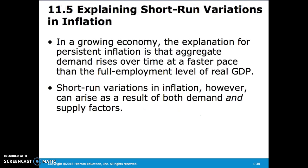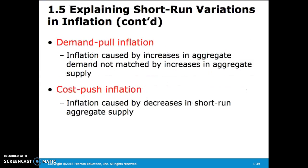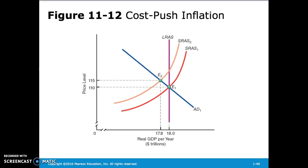In a growing economy, the explanation for persistent inflation is that aggregate demand rises over time at a faster pace than the full employment level of real GDP. Short-run variations in inflation can arise from both demand and supply factors. Demand-pull inflation is inflation caused by increases in aggregate demand not matched by increases in aggregate supply. Cost-push inflation is inflation caused by decreases in short-run aggregate supply, where the short-run aggregate supply decrease slides the equilibrium price level higher along the aggregate demand curve.